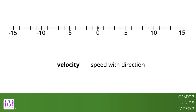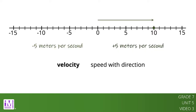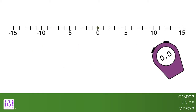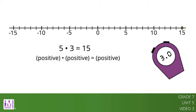For example, if you're moving 5 meters per second to the right, then your velocity is positive 5 meters per second. If you start at zero and move 5 meters per second for 3 seconds, you will be 15 meters to the right of zero. In other words, 5 times 3 equals 15. In general, a positive times a positive equals a positive.